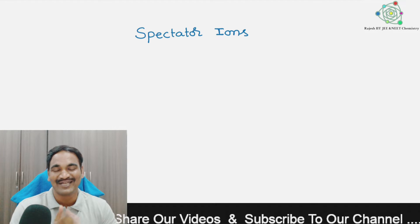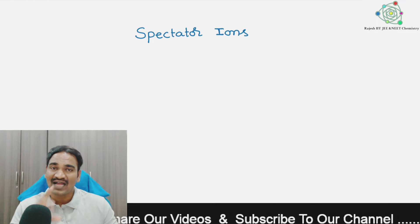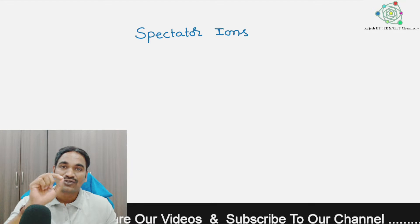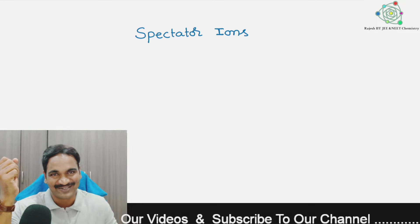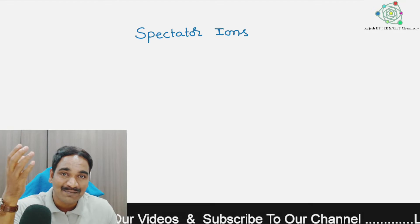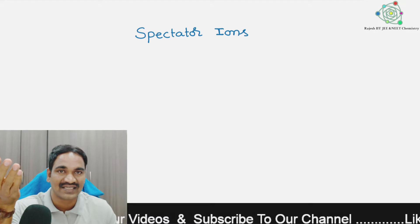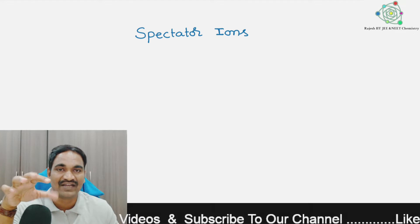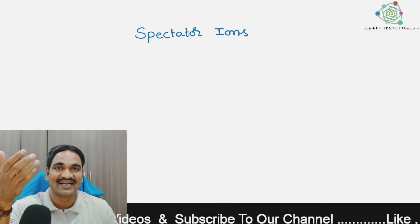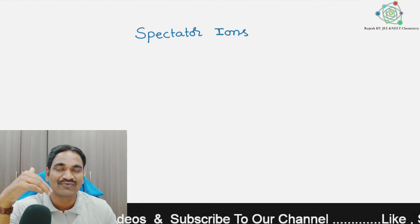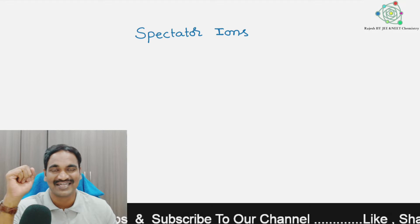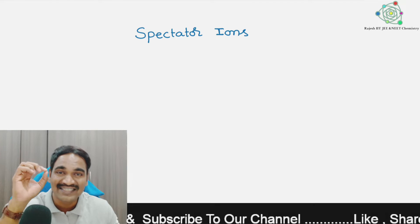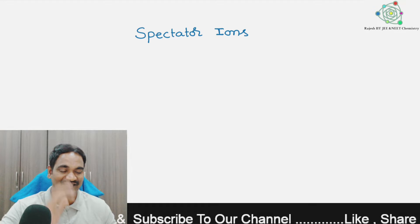Hello, my dear students. Today we are going to learn about a simple and important topic called the spectator ion — what it means, where we can see it, how we can identify it, and how spectator ions are useful when writing ionic equations.